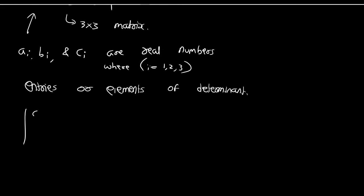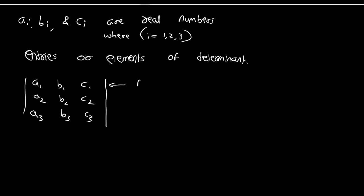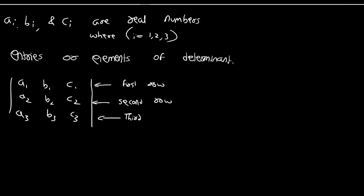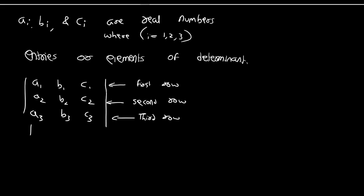In the third order determinant, let us consider A1, B1, C1, A2, B2, C2, A3, B3, C3. Here A1, B1, C1 is the first row; A2, B2, C2 is the second row; and A3, B3, C3 is the third row of the determinant. Whereas A1, A2, A3 is the first column; B1, B2, B3 is the second column; and C1, C2, C3 is the third column of the determinant.